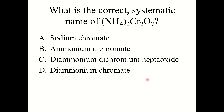Knowledge check: What is the correct systematic name of (NH4)2Cr2O7? You may need the polyatomic ion sheet for this. The correct answer is ammonium dichromate. We have two polyatomic ions here: NH4 is ammonium, and Cr2O7 is dichromate. So the name is ammonium dichromate.